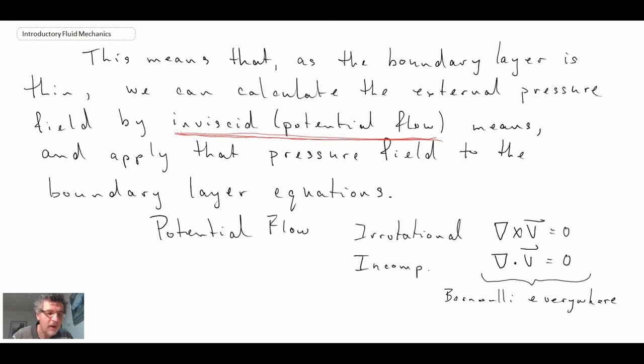You could use a method of superposition, but it also enables us to apply the Bernoulli equation everywhere, not just along a streamline, but everywhere in the flow. With that, we're going to use that for the boundary layer analysis. Specifically, we're going to use it to address the dp by dx term. We already saw that dp by dy was approximately equal to zero. There's no pressure gradient normal to the wall, but we still need to deal with the dp by dx term.